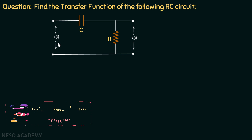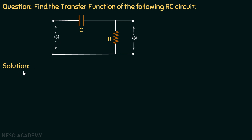Step number one is to find out the Laplace equivalent circuit. The Laplace transform of vi(t) is Vi(s), the Laplace transform of vout(t) is Vout(s), the Laplace transform of the resistor is R, and the Laplace transform of the capacitor is 1 over sC.